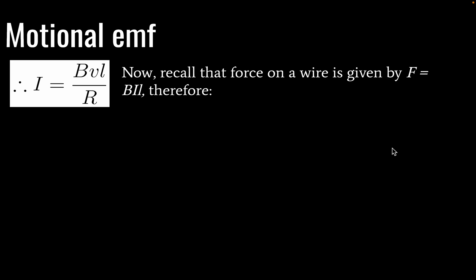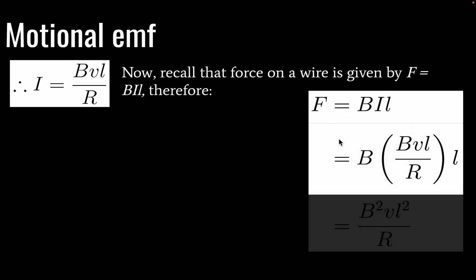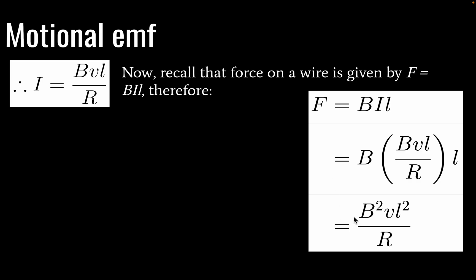We also know from topic five that force on a wire will be given by B times I times L where I is equal to current and L is equal to again the length of the wire. And so therefore we can do a little substitution here and we'll find that by substitution force is equal to B squared times the velocity of our conductor or wire times the length of the wire squared divided by resistance. And this is the resistance of the circuit.